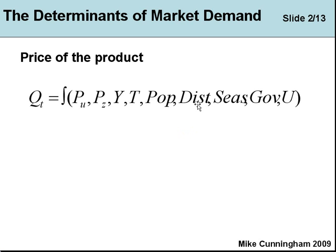Also, if the distribution shifts — say in favour of older people — then the demand for MP3 players might fall off, whereas the demand for beds might increase. Demand depends on the seasons as well; we consume more energy in winter, more electricity, more gas. It depends on government policy too — it might try to discourage us from consuming alcohol or smoking cigarettes. And the last variable, U, just means something we've forgotten, because we probably haven't got an exhaustive list. U is a portmanteau term that picks up everything we've left out.